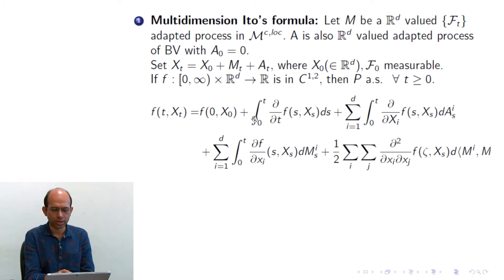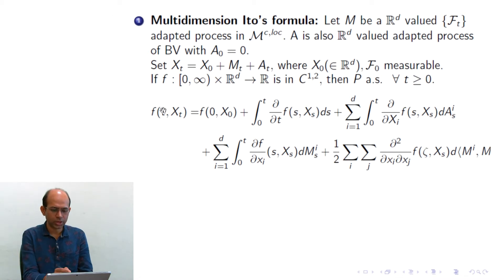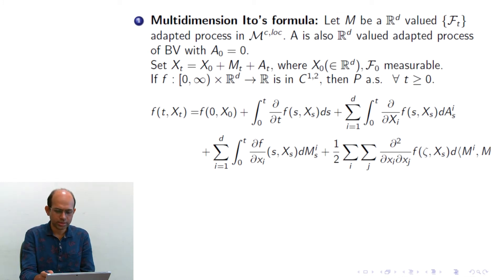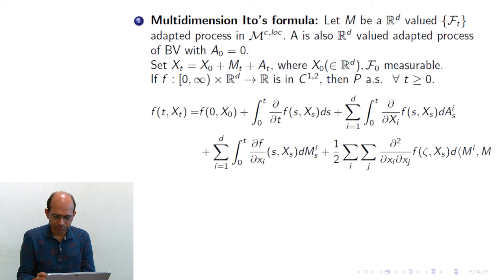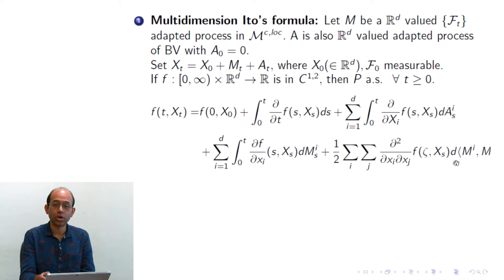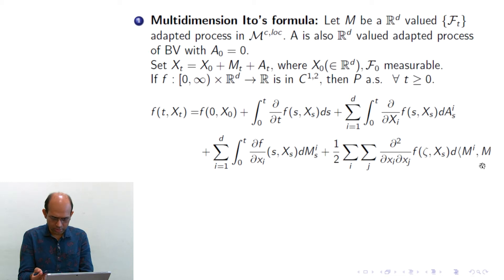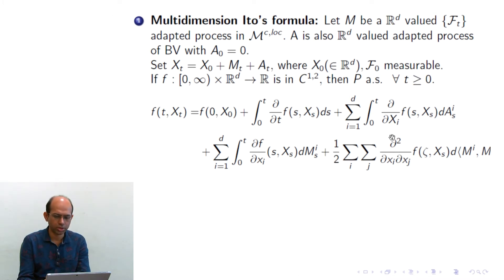The only new term we see here is because we have taken f to be explicitly dependent on time. That is why we get this extra term. This part is the stochastic integration of ∂f/∂x_i with respect to M^i_s, and then there is a remaining term — with a typo, it should be small s — which is (1/2) times the sum over all i and j of ∂²f/∂x_i∂x_j evaluated at (s, X_s), times d⟨M^i, M^j⟩_s, integrated from 0 to t. This is the multidimensional Itô's formula.